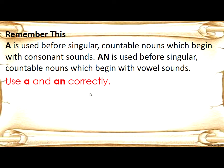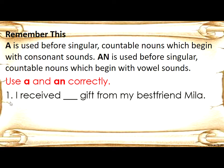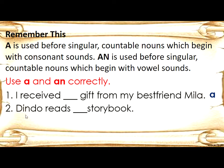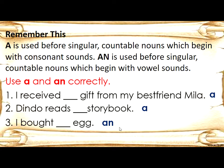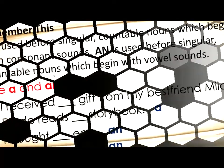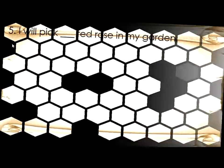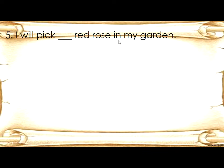Use A and AN correctly. Number one: I received blank gift from my best friend Mila — write A. Number two: Dinder reads blank storybook — write A. Number three: I bought blank egg — write AN. Number four: This is blank eraser — write AN. Number five: I will pick blank red rose in my garden — write A.